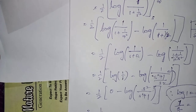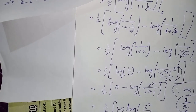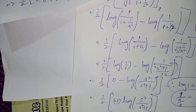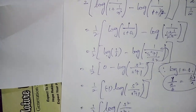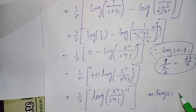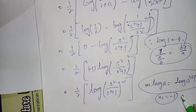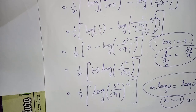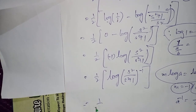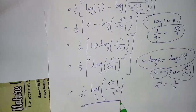This equals (1/2)·(-1)·log(s²/(s² + 1)) = (1/2) log(s²/(s² + 1))^(-1). Using a^(-1) = 1/a, this becomes (1/2) log[(s² + 1)/s²]. This is the final answer: L{(1 - cos t)/t} = (1/2) log[(s² + 1)/s²].